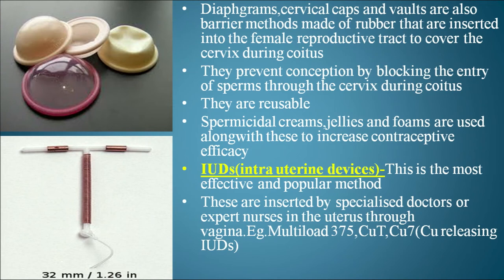Diaphragms, cervical caps, and vaults are also barrier methods made of rubber, inserted into the female reproductive tract to cover the cervix during coitus. They prevent conception by blocking the entry of sperm through the cervix. They are reusable. Spermicidal creams, jellies, and foams are used along with these devices to increase contraceptive efficacy.